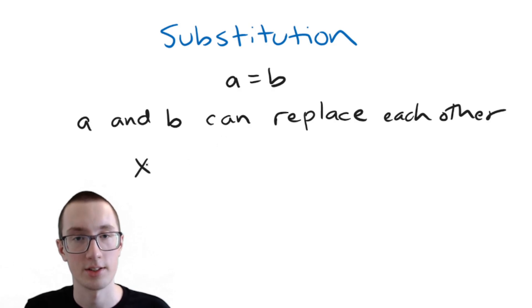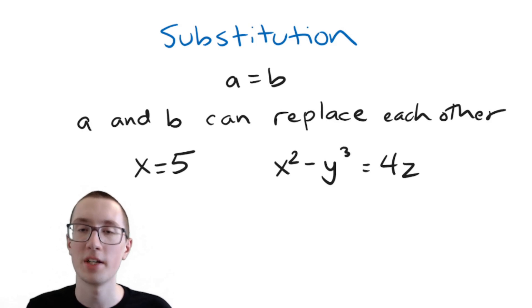let's say that we know that X and 5 are equal to each other. And then let's say we had some sort of complicated equation like X squared minus Y cubed equals 4Z. The equation is not important, but basically what the substitution property says is that we can replace X with 5 and 5 with X.